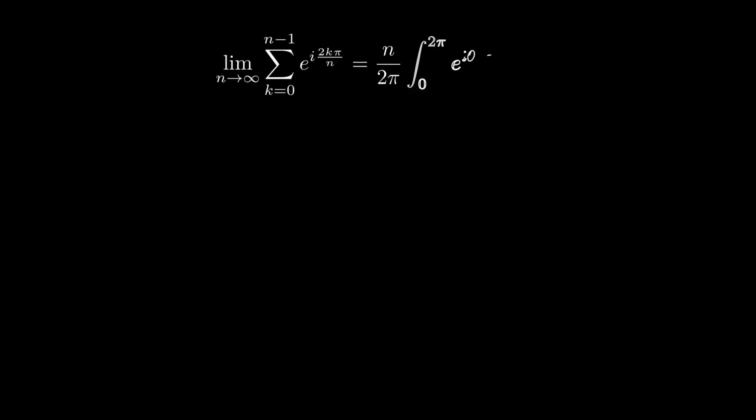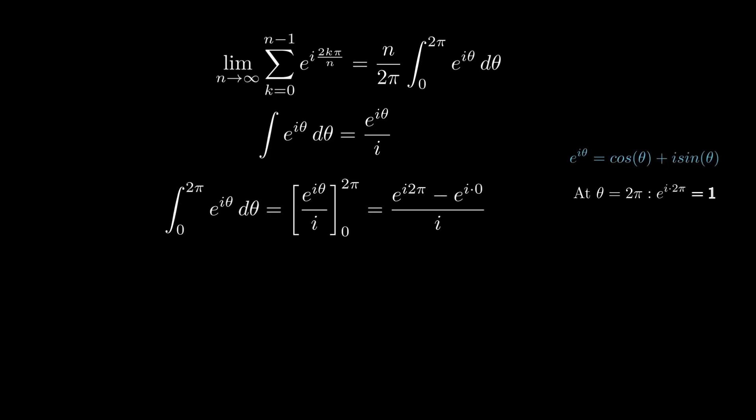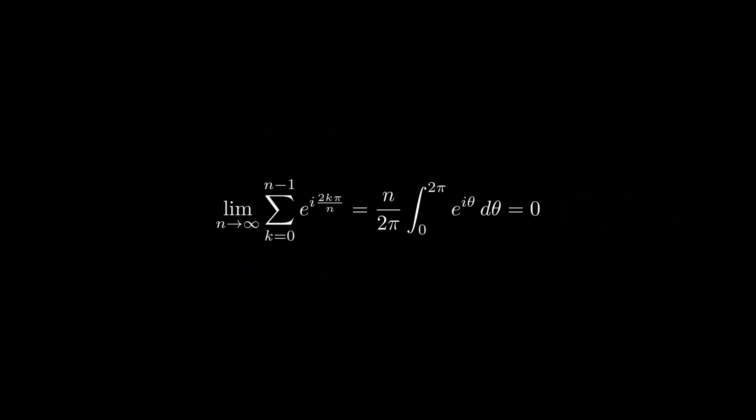To evaluate the integral, we use the antiderivative of e to the iθ, which is e to the iθ over i. Now, we can substitute the limits from 0 to 2π. At 2π, e to the i(2π) is 1. And at θ equals 0, e to the i(0) is also 1. Hence, the integral of e to the iθ from 0 to 2π simplifies to (1 - 1)/i, which is 0. This proves that the sum of vectors is 0 even in continuous distribution, just like in the discrete case.